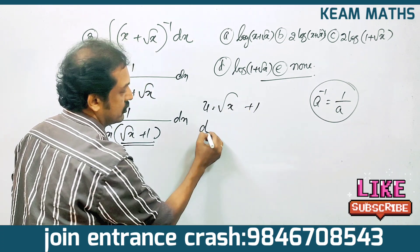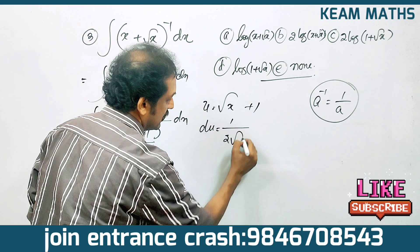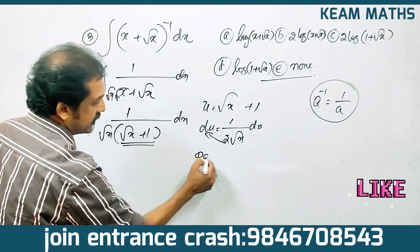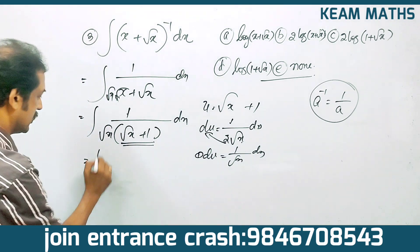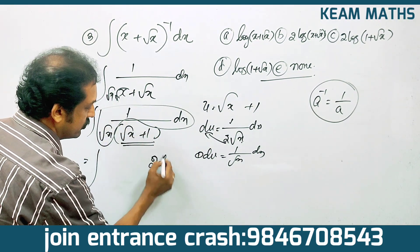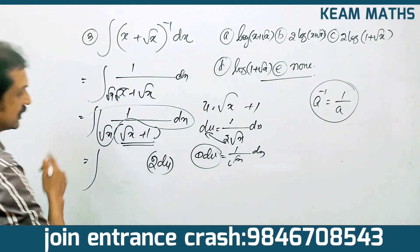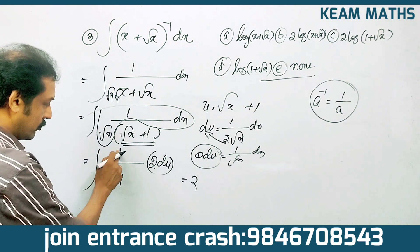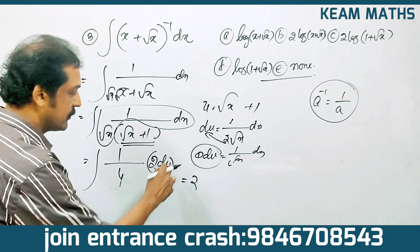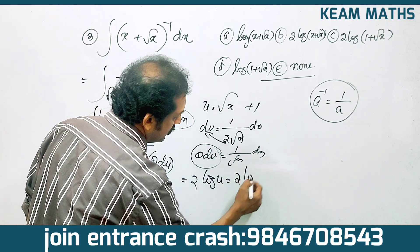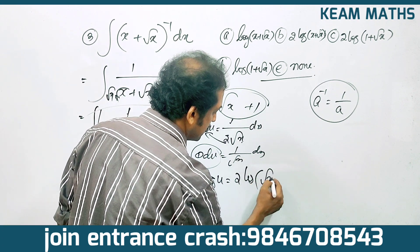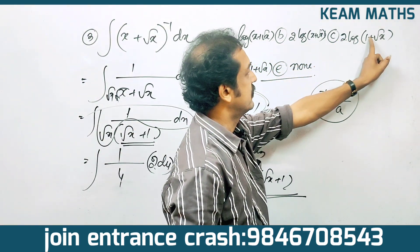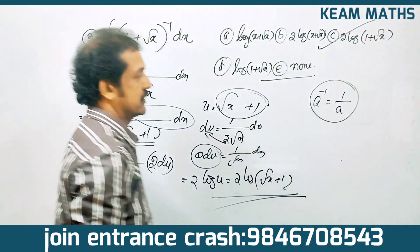Substituting, the question becomes 2 into 1 by u du. Integrating, 1 by u gives log u, so the result is 2 log u, which is 2 log(root x plus 1) plus c. The answer is 2 log(1 plus root x) plus c. Check the options — that is correct.